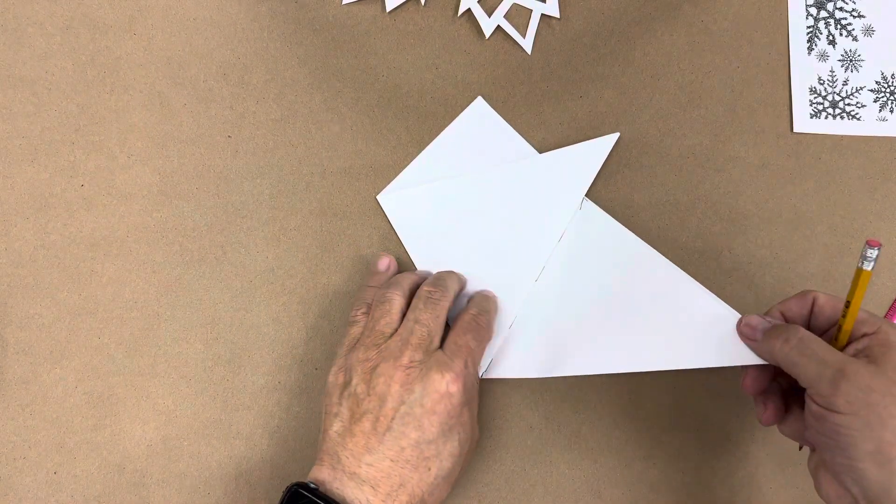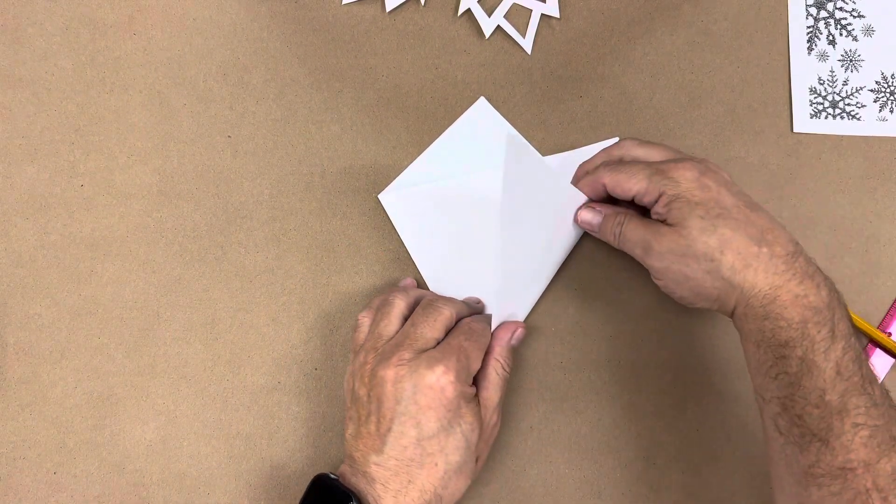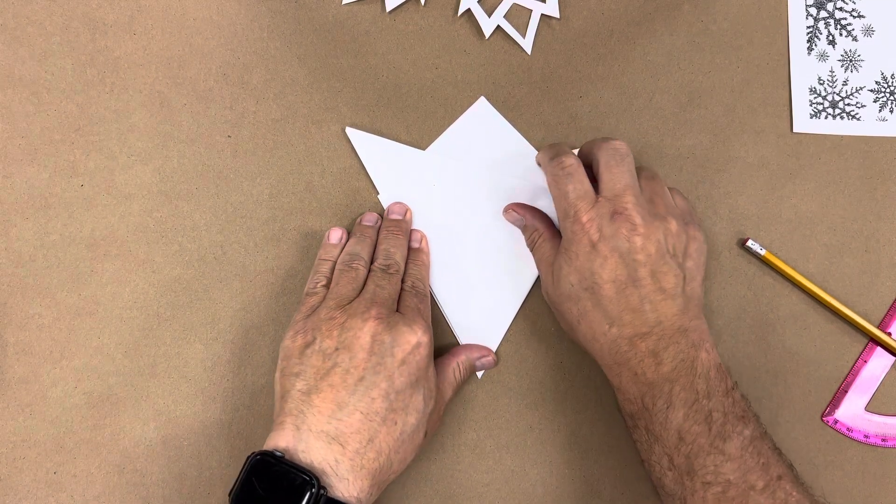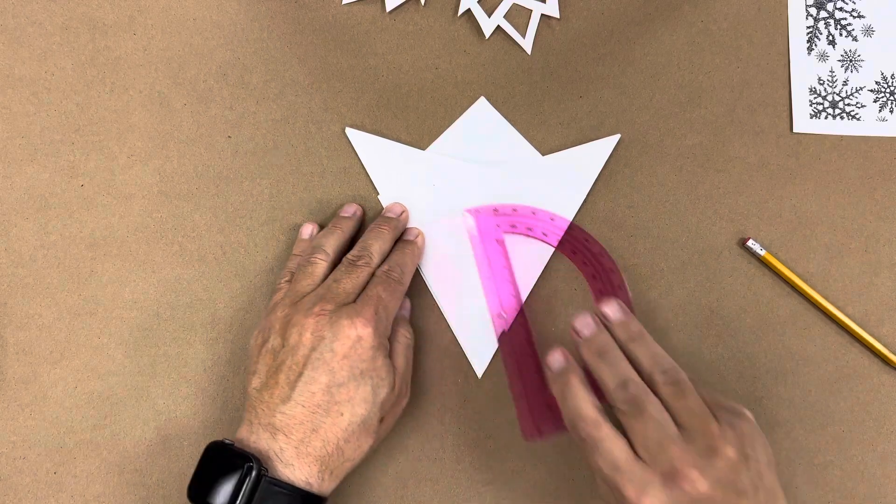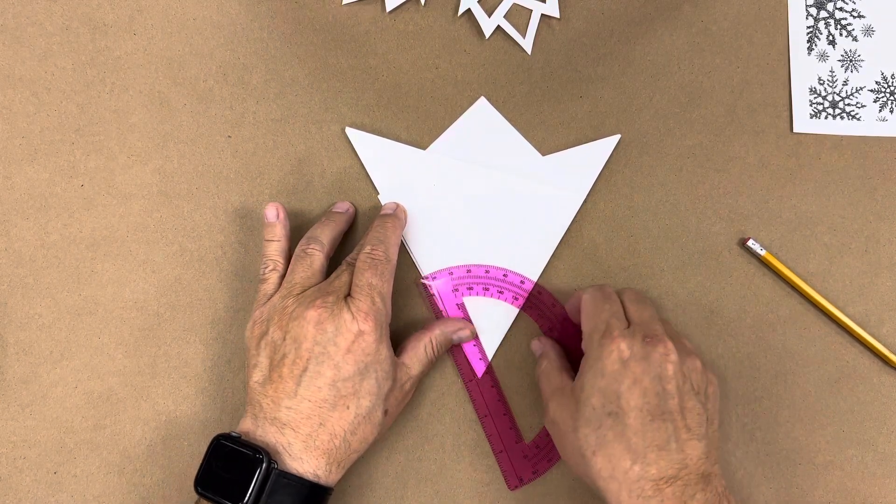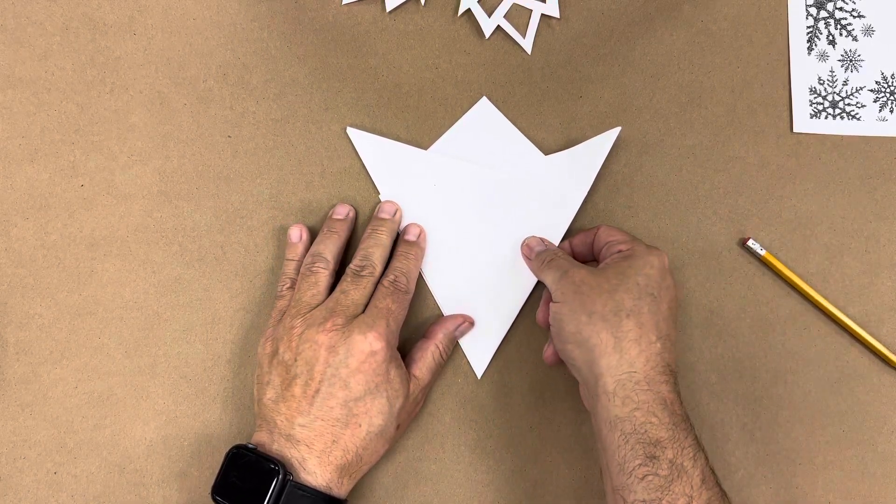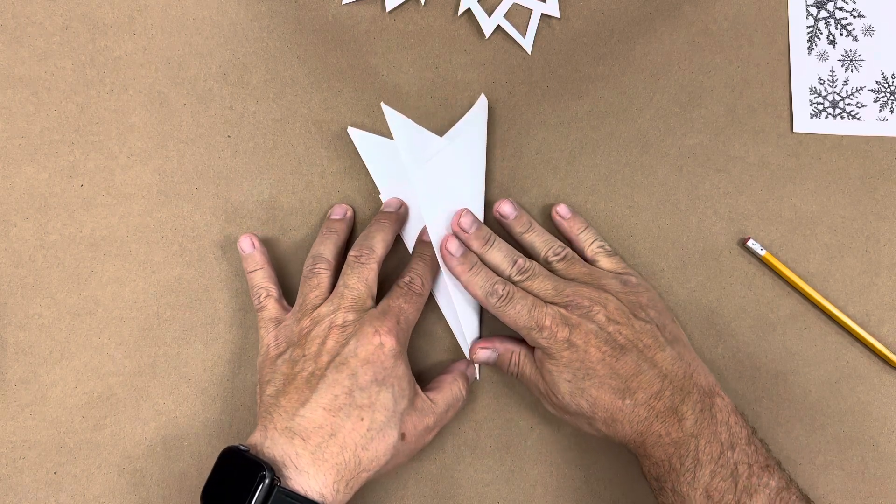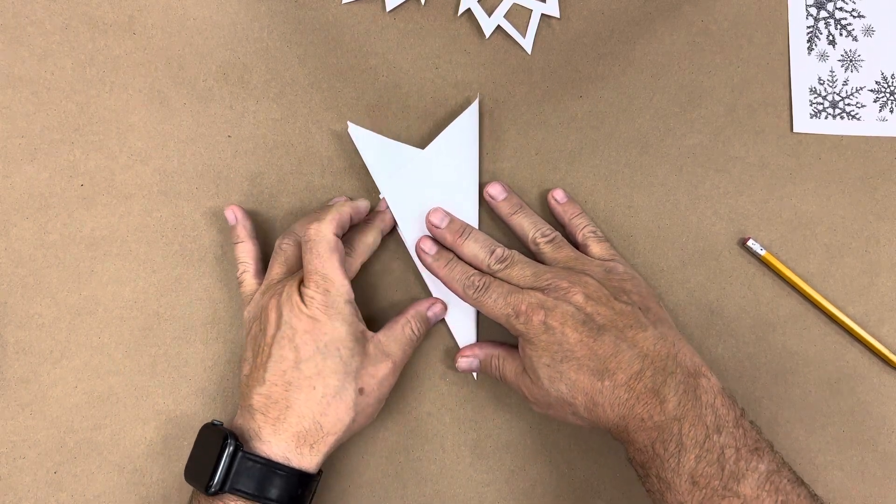Then we can take this other side and fold it over to match the side next to it. And now we have a 60-degree angle that goes across. So we have our third. We actually need to take this and fold it in half one more time so that we can create our snowflakes.